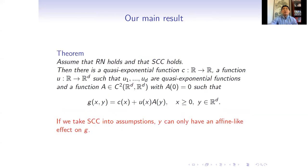Next, we present our main result. If we assume RN and SCC, then there is a quasi-exponential function c from R to R, a function u with quasi-exponential functions as its components, and a C² function A which vanishes at zero, such that g equals to c(x) + u(x)A(y).